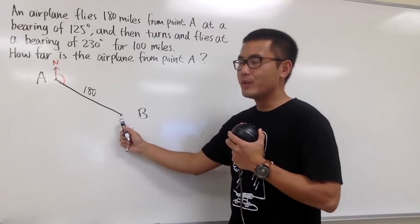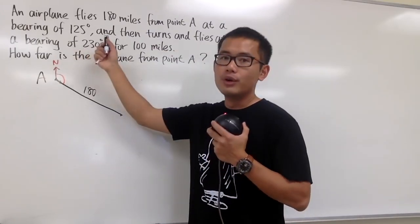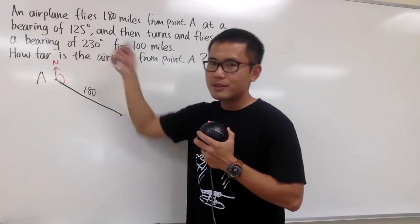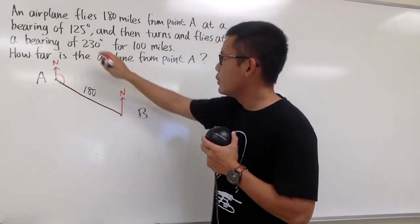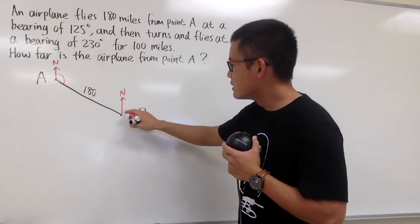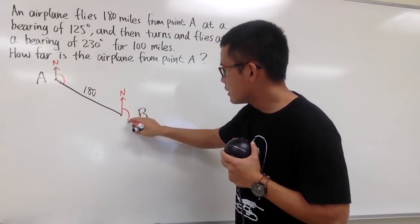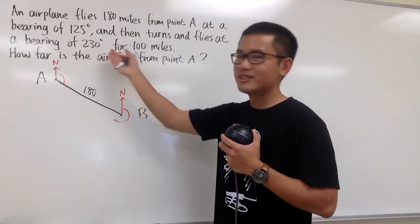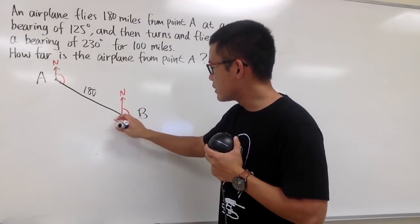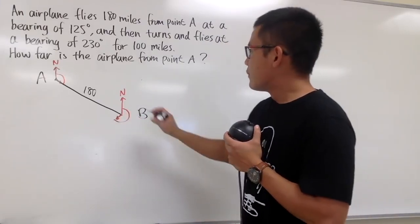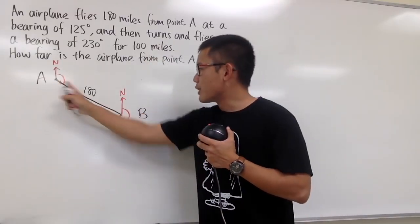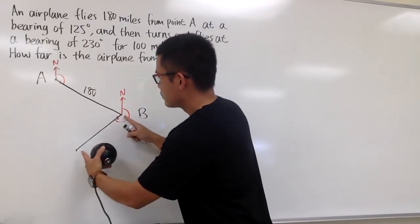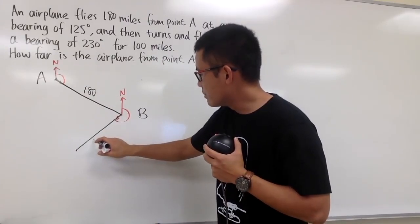From B, we fly at a bearing of 230 degrees — again, look north and turn clockwise. From north to south is 180 degrees, and we need 50 more to reach 230 degrees. So we go 50 degrees past south. I draw the 100-mile second leg in that direction, placing the final position of the airplane below and to the left of B.